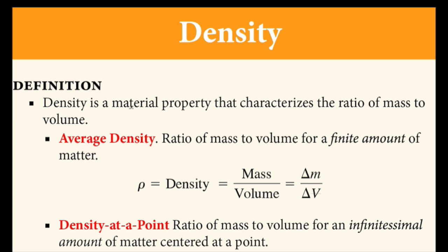In summary, density is a material property. It characterizes the ratio of mass to volume. There are two types of density which are important. The first is average density,